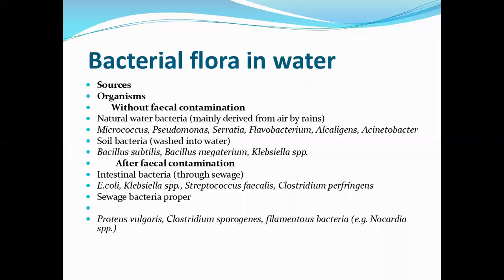Next is soil bacteria. From air we have seen bacteria coming from air into the water body. Soil bacteria come from soil — while water is flowing they will be washed from soil into the water body. Examples are Bacillus subtilis, Bacillus megaterium, and Klebsiella species. All these organisms come from either air or from soil into the water source, not by fecal contamination.